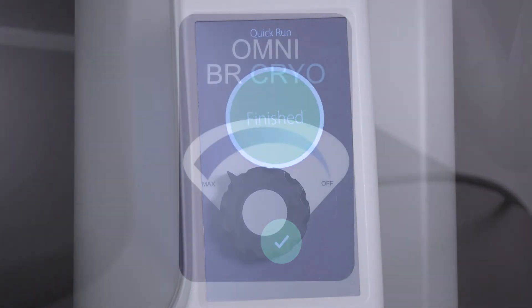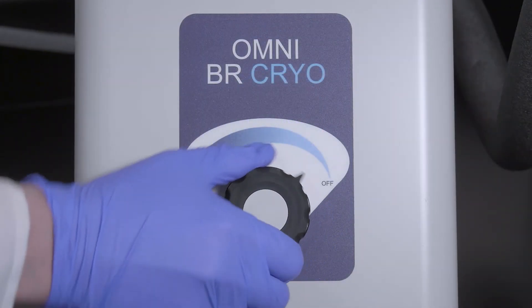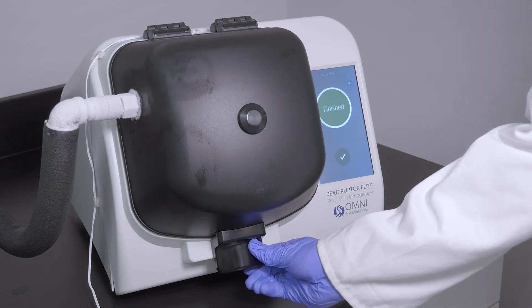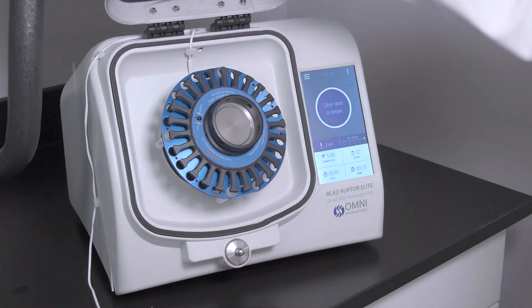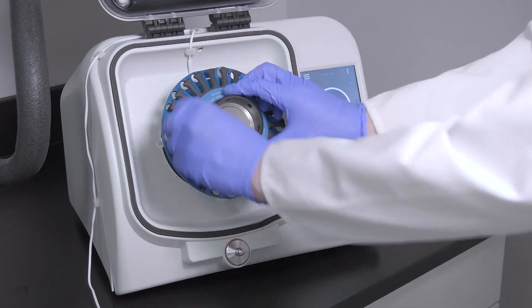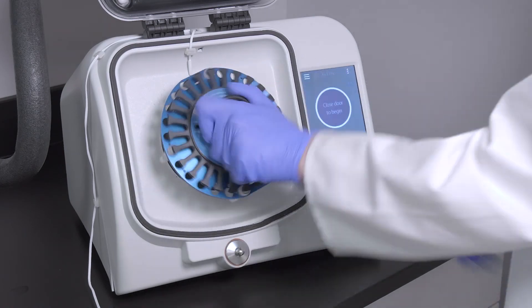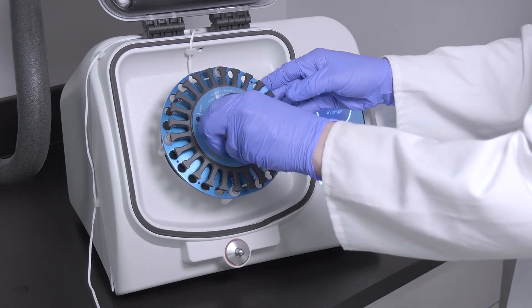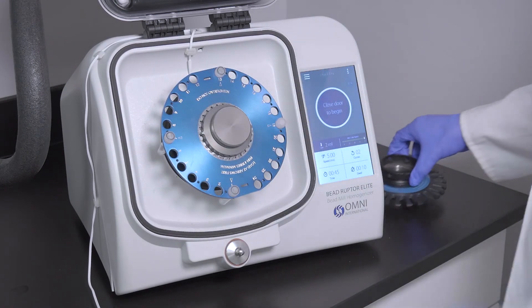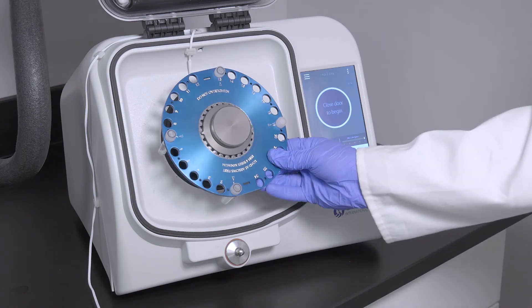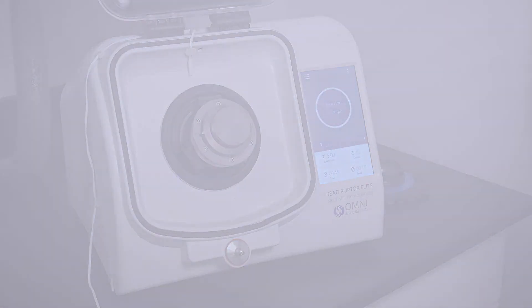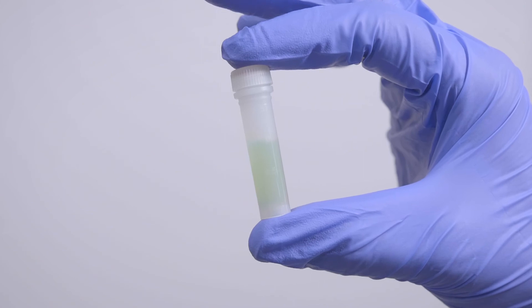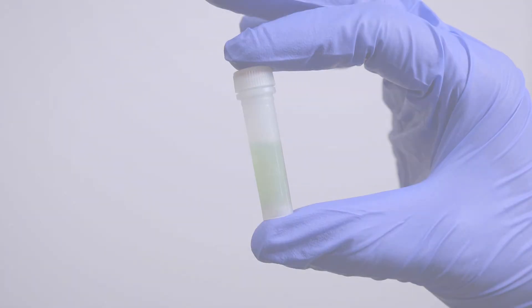When the cycle is complete, return the BeR Cryo control knob to the off position. Open the BeadRuptor lid and remove your samples.